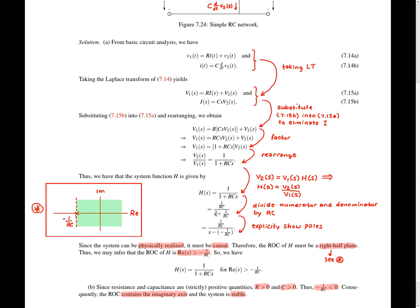Then we can rewrite the denominator slightly to show explicitly the pole. In particular, we have a pole at minus 1 over RC. So now we have an algebraic expression for big H, but we still need to find the region of convergence. Since big H is a rational function with a single pole at minus 1 over RC, it can have either a left half plane or right half plane region of convergence. Because this system is physically realizable — in other words, we can build it — it must be causal, and therefore must have a right half plane region of convergence.